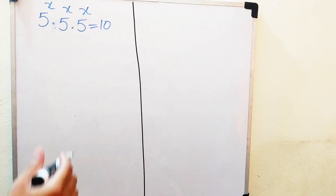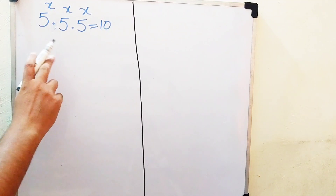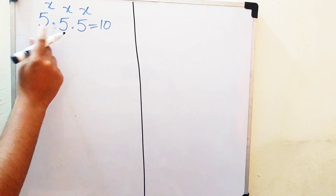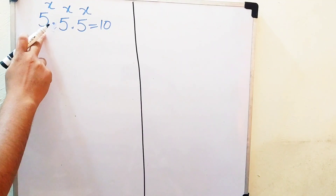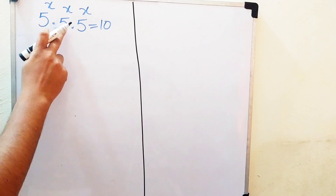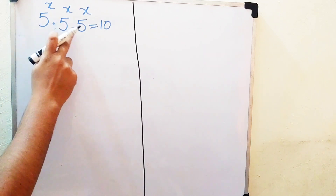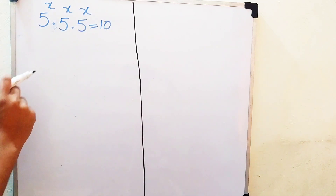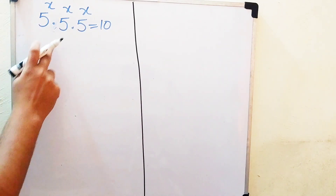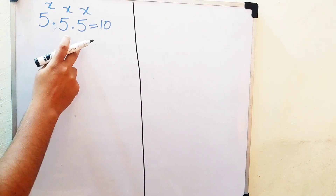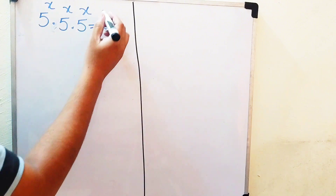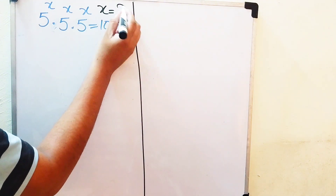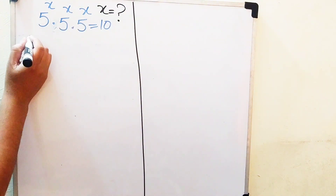Hello everyone, welcome. We are going to solve this math exponential equation problem. Here we have 5 to the power of x, times 5 to the power of x, times 5 to the power of x, equals 10, and we will solve this problem for the values of x.